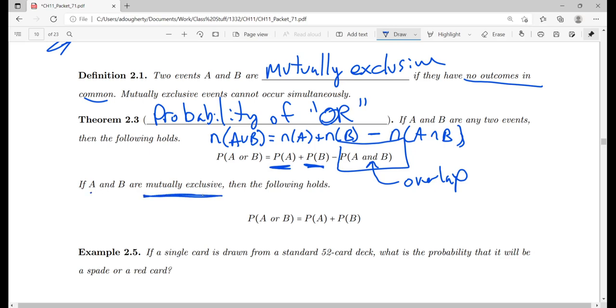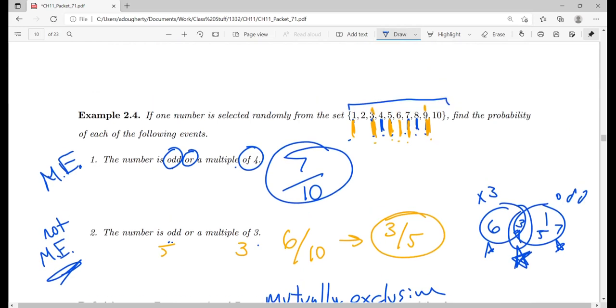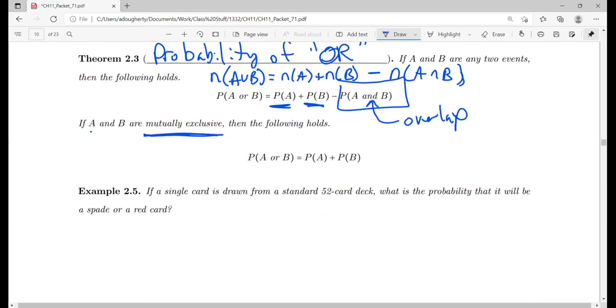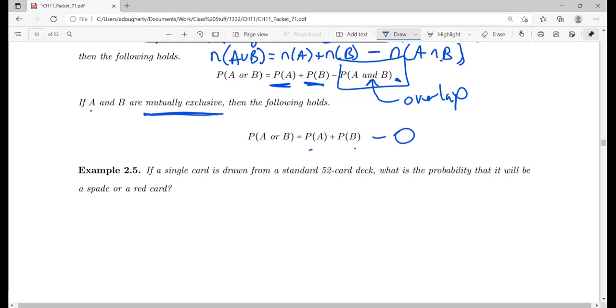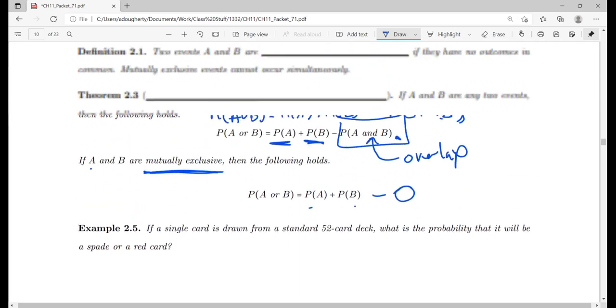But again, if the two events are mutually exclusive, just like they were up here, then you could take your five odd numbers plus your two multiples of four and get to seven. You can just add, because the overlap is just zero. Same formula, I just subbed the zero in.